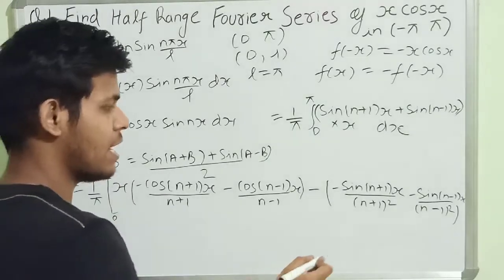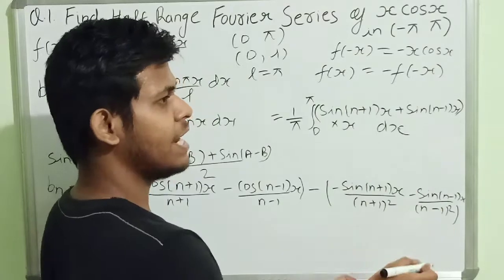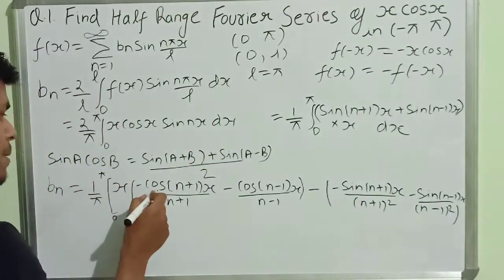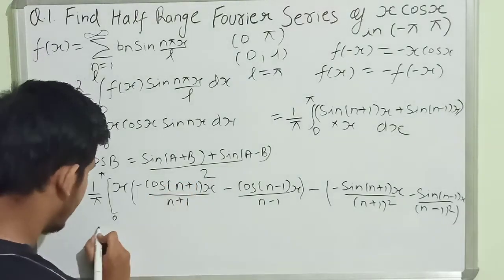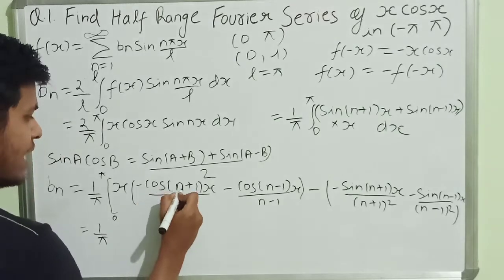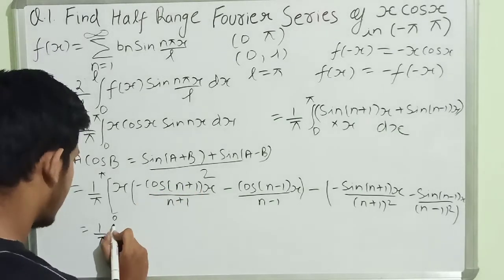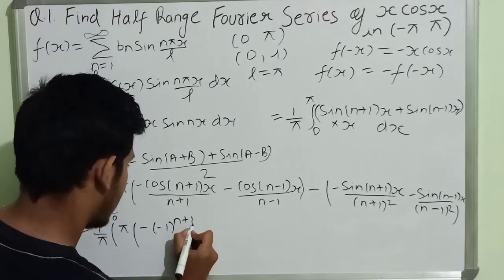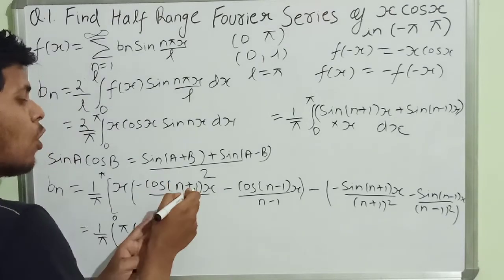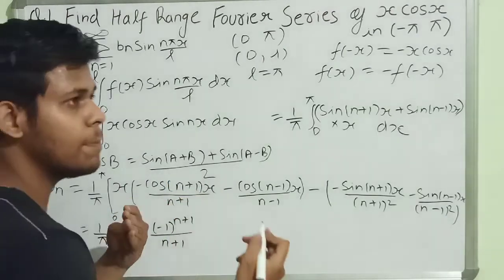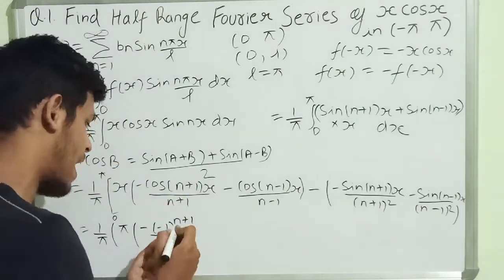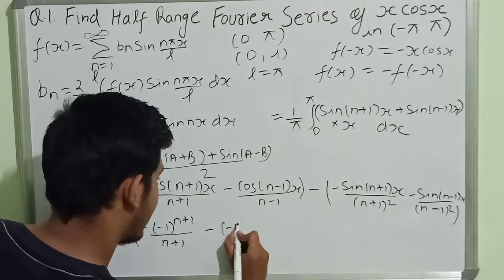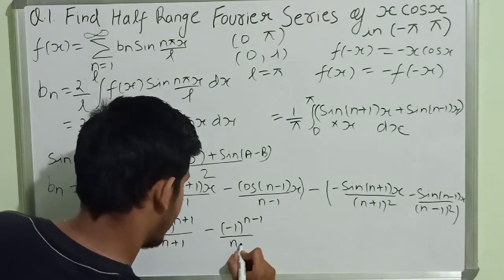Now applying the limits from 0 to π: the sine terms become 0 at both π and 0 because sin(nπ) is always 0. At x equals π, the cosine terms give us: 1 upon π times π times [minus(-1)^(n+1)/(n+1)]. Because cos(nπ) equals (-1)^n, and cos((n+1)π) equals (-1)^(n+1).